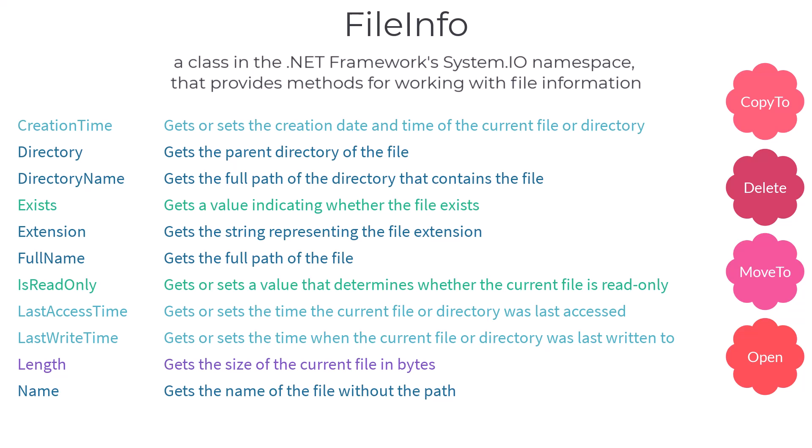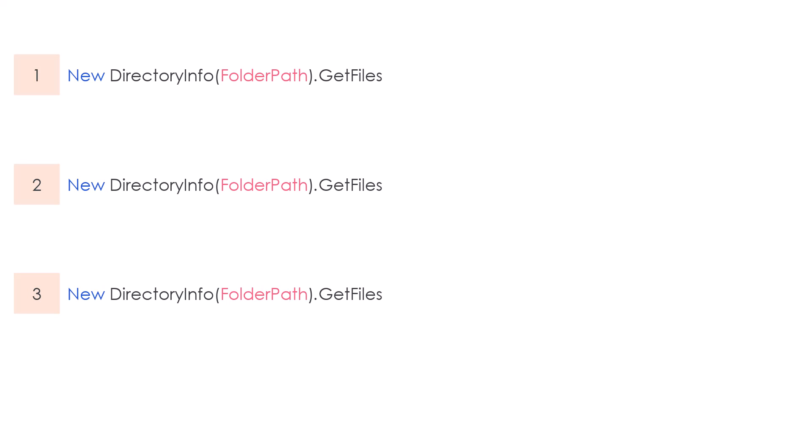Let's now see how to get files from a folder as a FileInfo array. First we define a new DirectoryInfo object with the folder path in brackets. DirectoryInfo has many different methods such as Create, Delete, MoveTo, etc. One of the methods is GetFiles, which is what we need. This method has 4 overloads; I will discuss 3 of them used in this course.